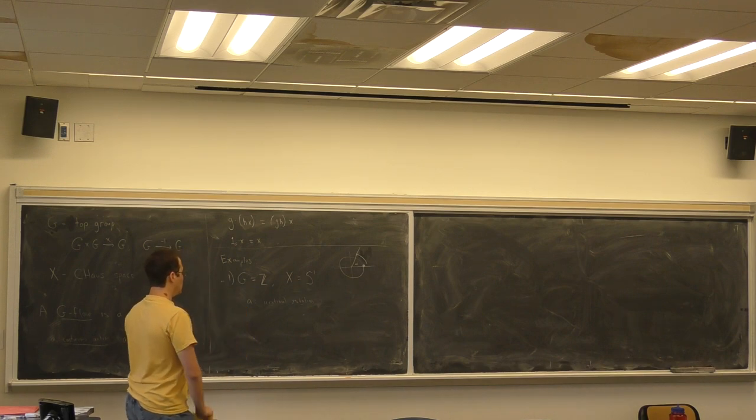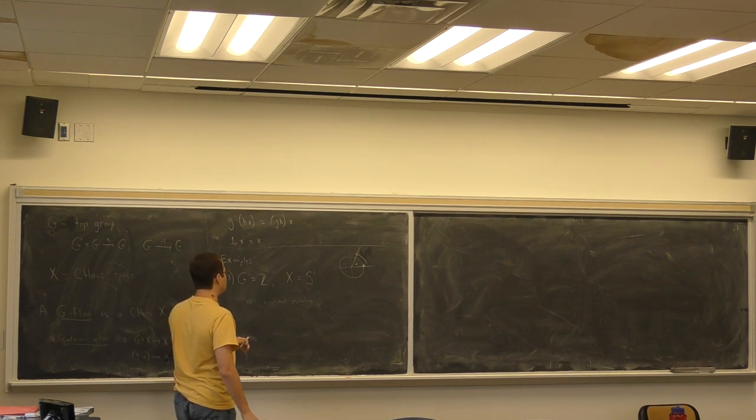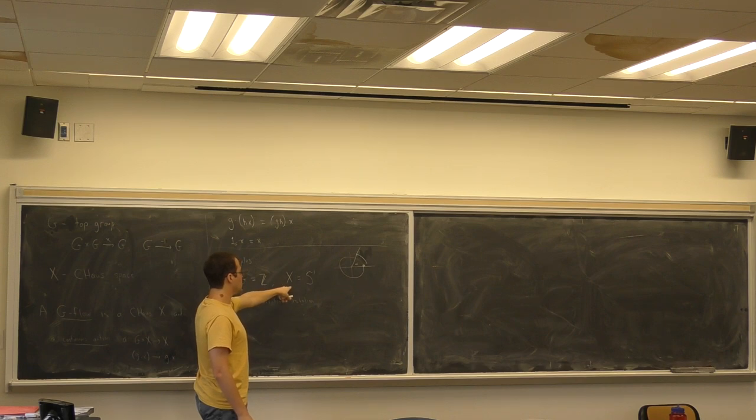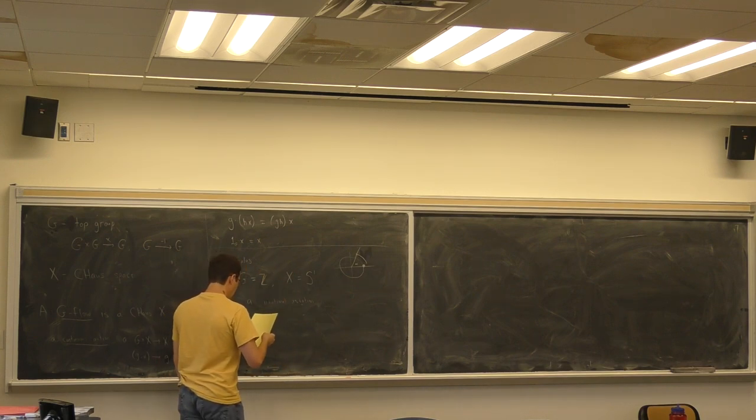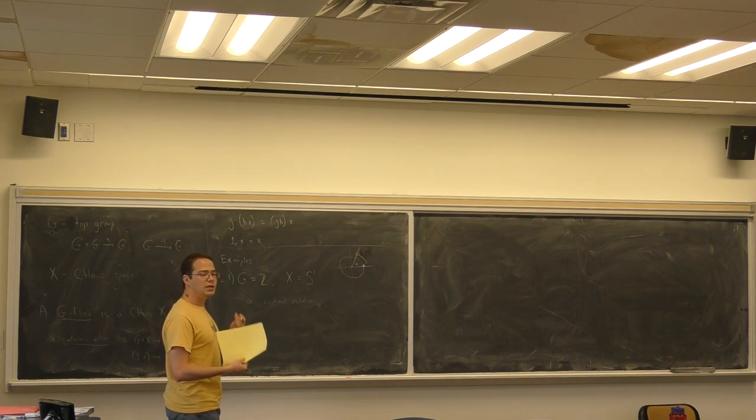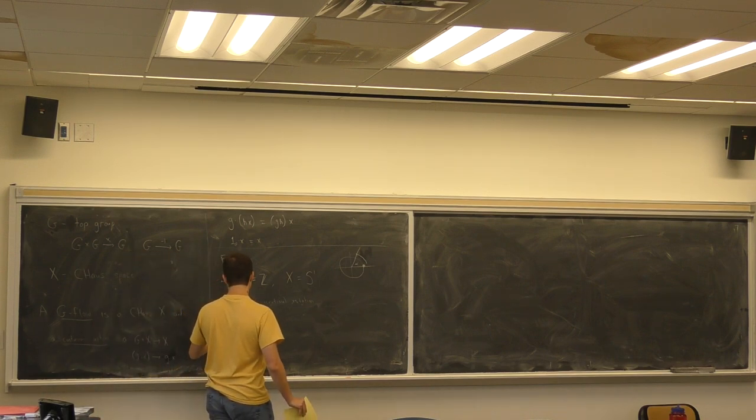So this is a flow. Since Z is a discrete group, to check the continuity, you just need to know that each group element acts continuously on the circle. And these rotations are clearly continuous. The same space can admit many different flow structures. So I could change the group, for instance. Let's change the group.